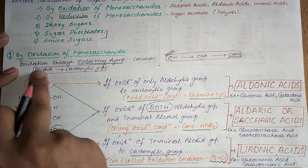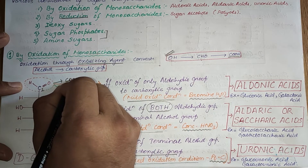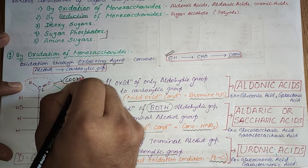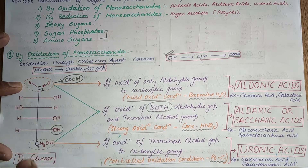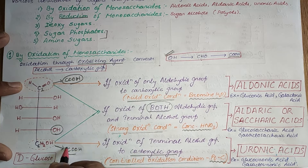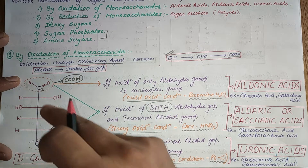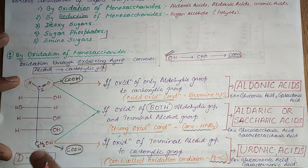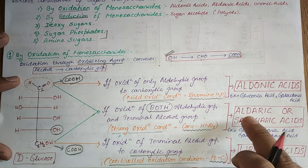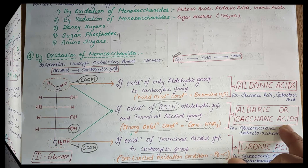In terms of structure: in aldonic acid, only the C1 aldehydic group is converted to COOH. In uronic acid, only the terminal carbon atom is oxidized to COOH. In aldaric or saccharic acid, both terminal carbons in the glucose structure are converted to COOH groups.